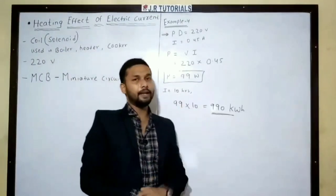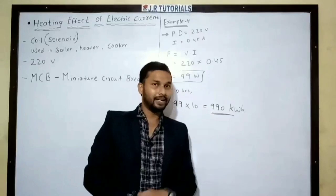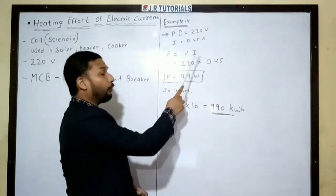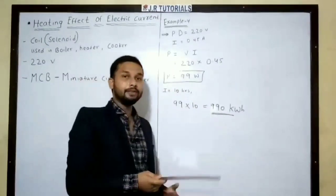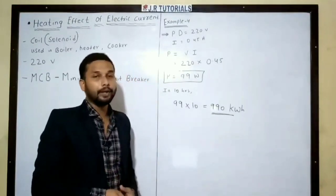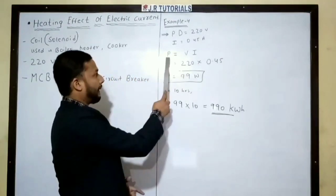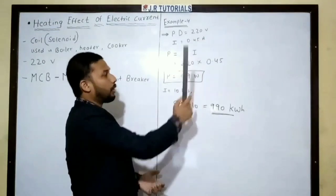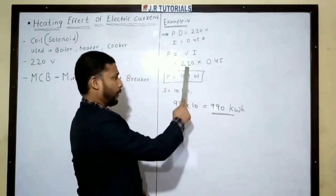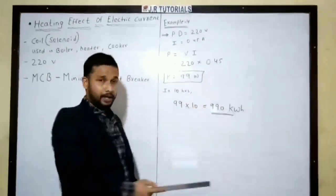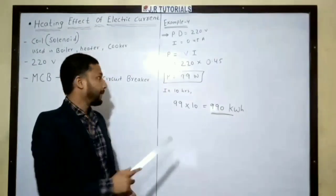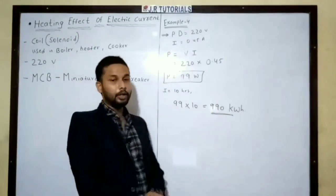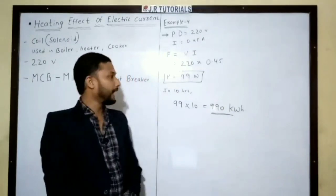We have already discussed that electric power P is equal to V multiplied by I, where V is voltage and I is current. So voltage and current multiplied gives electric power. We put in the values: 220 multiplied by 0.45. The answer is P = 99 watts.